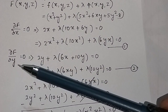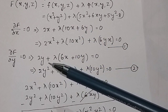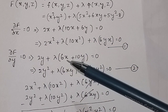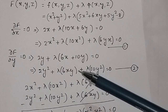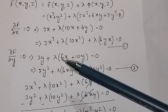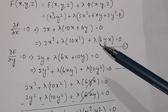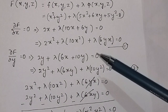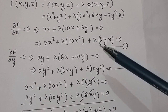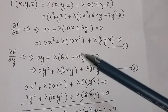Similarly, taking the partial derivative with respect to y and setting it to 0: the partial derivative of x² + y² gives 2y, and the partial derivative of the constraint gives λ(6x + 10y), so 2y + λ(6x + 10y) = 0. Multiplying through by y gives 2y² + λ·6xy + λ·10y² = 0. We multiply by x in the first equation and y in the second because both then contain the term λ·6xy, making the two equations comparable.